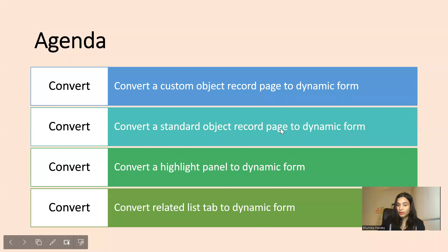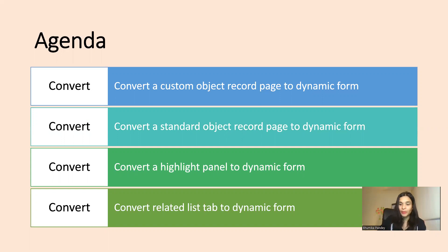This was all about setting up custom and standard object record detail pages, highlight panels, and related list tabs into dynamic forms. In the next session, we'll see a few more real-time use cases where you'll apply filters, giving you a better understanding of how we can save time and space — handling many requirements and scenarios with a single dynamic form instead of creating extra page layouts. I'll see you in the next session — bye!